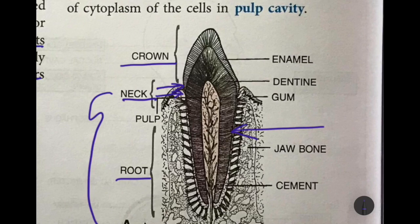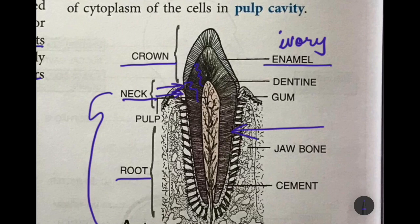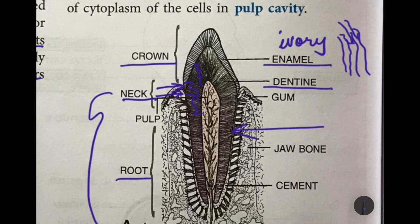The outer layer of the tooth is made up of enamel, also known as ivory, which is the hardest substance in the body — remember that if asked in a one-word answer. Below the enamel, the main bulk of the tooth is made up of dentine, which is harder than bone but not as hard as enamel. Within the dentine there are canals — empty spaces — which contain strands of cytoplasm from the cells in the pulp cavity. The central space inside the tooth is the pulp cavity.